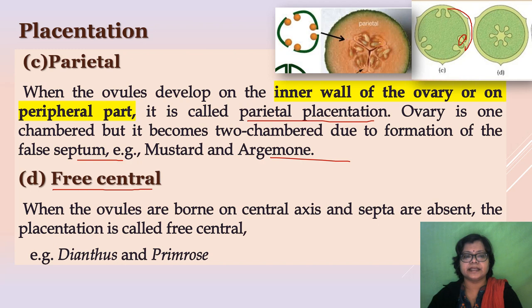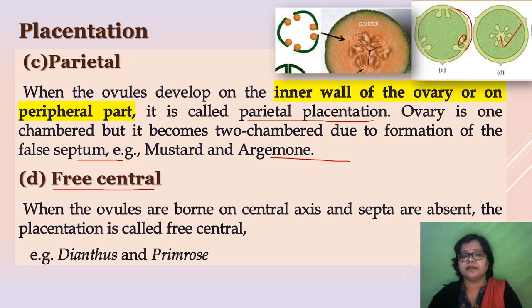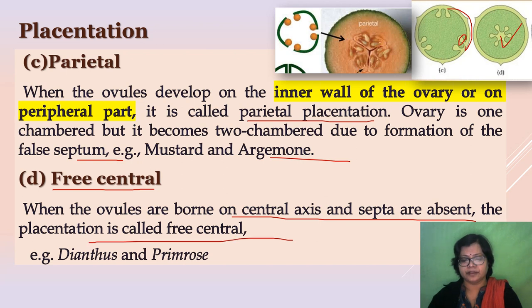The next type is free central placentation. In this type, many ovules are freely attached to the central axis — that is why the name is free central. Example: Dianthus, primrose. When the ovules are borne on the central axis and septa are absent, it is called free central placentation.